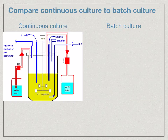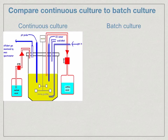Continuous cultivation involves a constant stream of nutrients being added and the products being continuously removed over a period of many weeks. This process is quicker than batch cultivation because there's no downtime between each batch. However, continuous cultivation is only suited to the production of biomass or metabolites that are associated with growth.